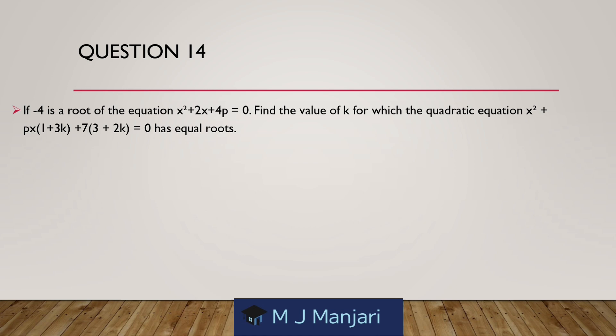Question 14. If minus 4 is a root of the equation x² plus 2x plus 4p is equal to 0, find the value of k for which the quadratic equation x² plus px(1 plus 3k) plus 7(3 plus 2k) is equal to 0 has equal roots.